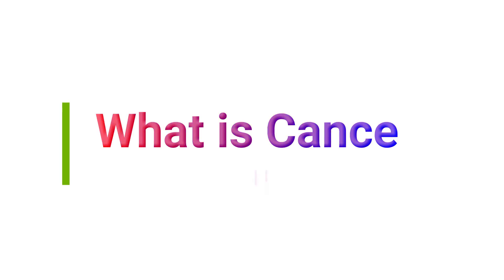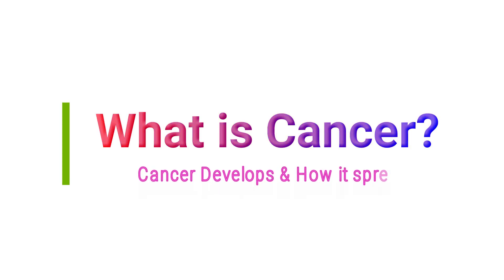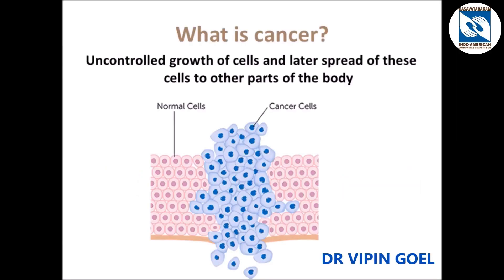Hello friends. In this short video we will see what is cancer, how cancer develops and how cancer spreads. Cancer is uncontrolled growth of the cells. Here, pink cells are the normal cells and blue cells are the cancer cells. These blue cells go on multiplying multiple times and after some time get separated and spread to other parts of the body.